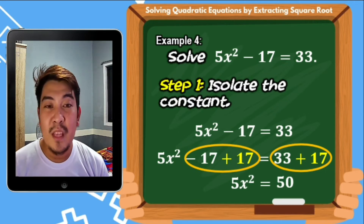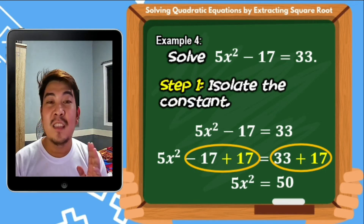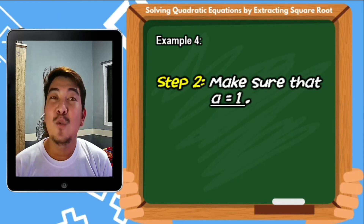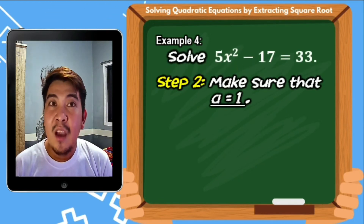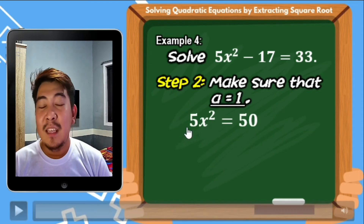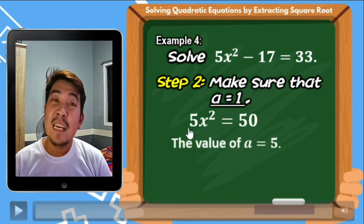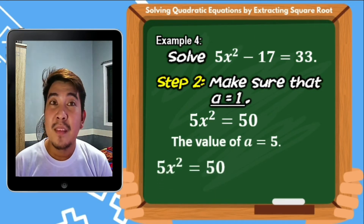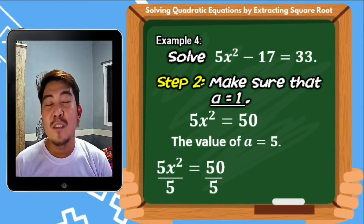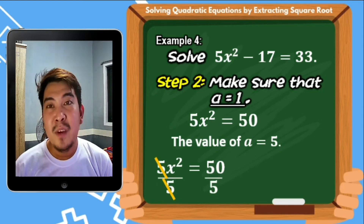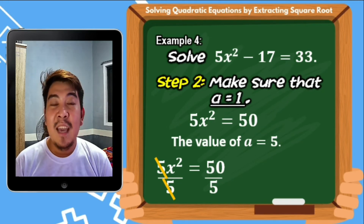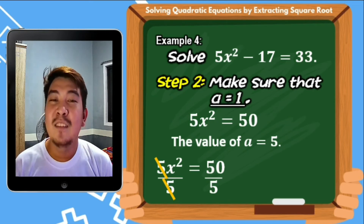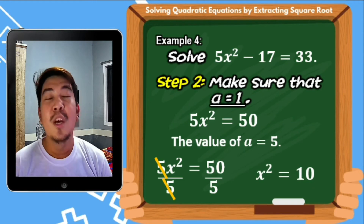So 5x squared equals 50. Step number 2: the value of A is 5, so we divide both sides by 5. 5x squared divided by 5 gives x squared, and 50 divided by 5 gives 10. Therefore we have x squared equals 10, and the value of A is now 1.